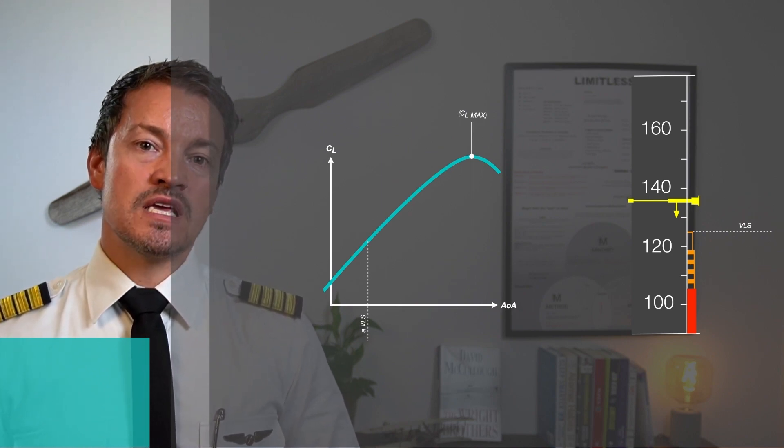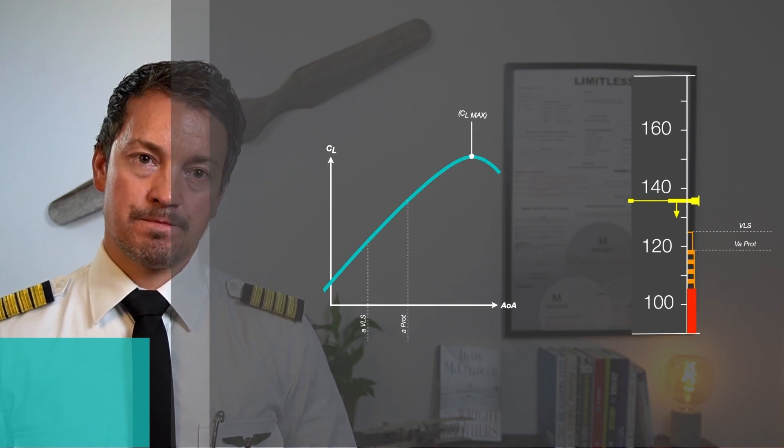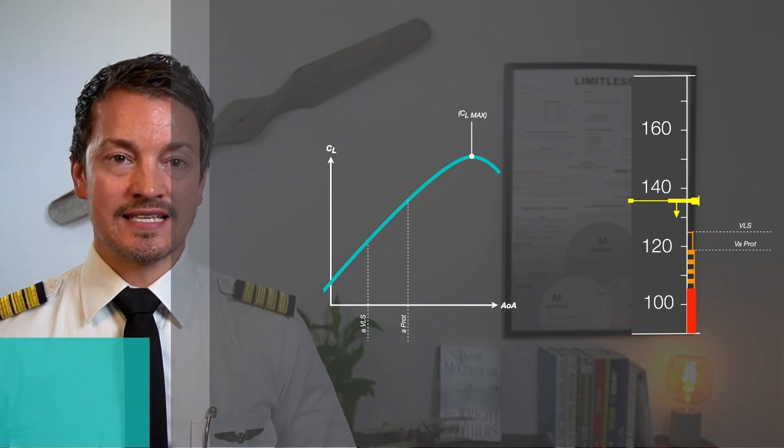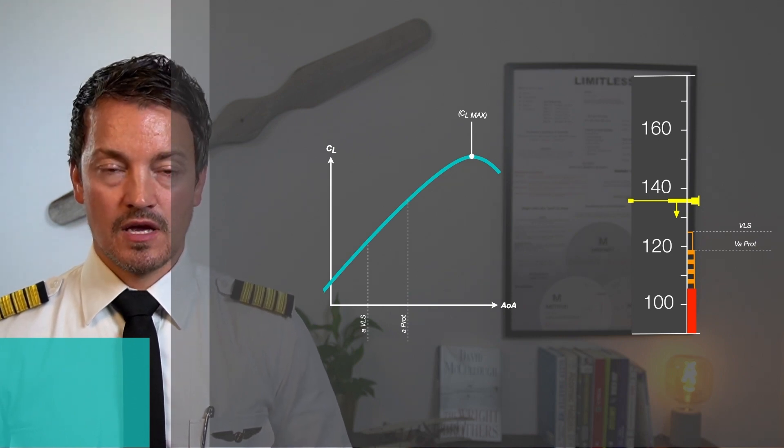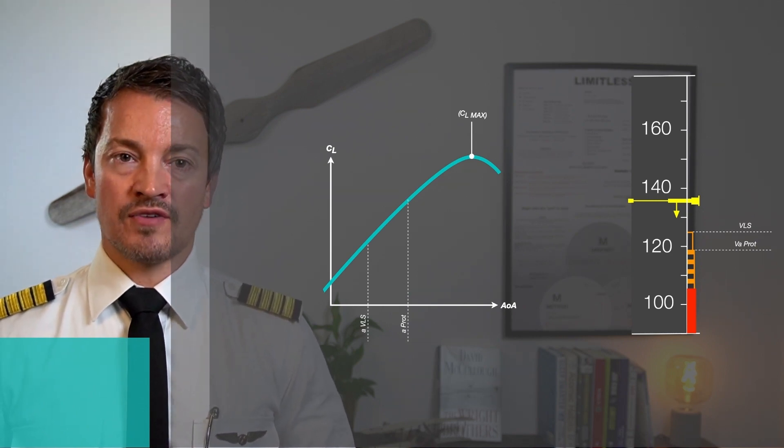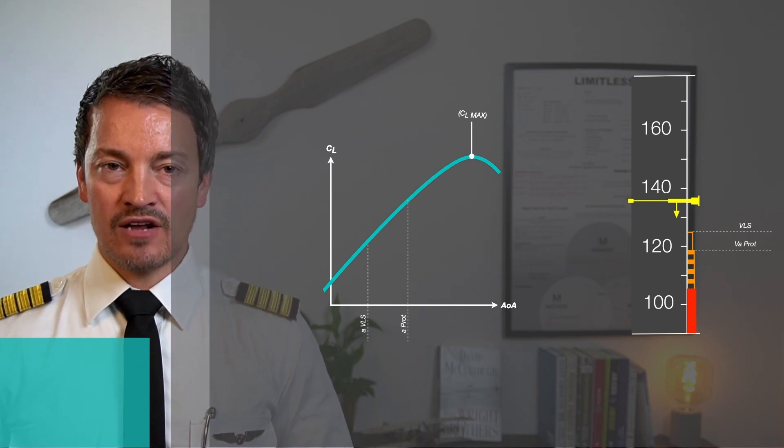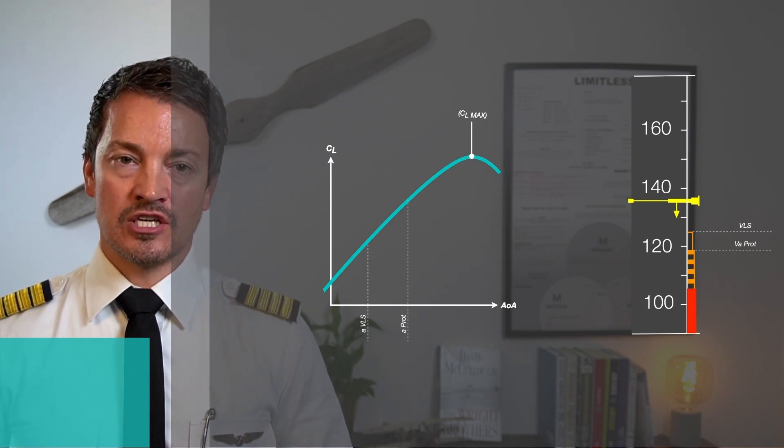That is called V-alpha prot. V-alpha prot is where the high angle of attack protection kicks in. It becomes active. It introduces a couple of things around the aircraft, which are automatic. For example, lateral spiral stability is introduced,